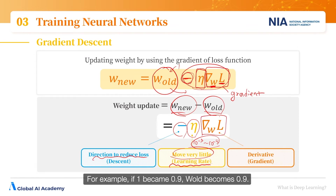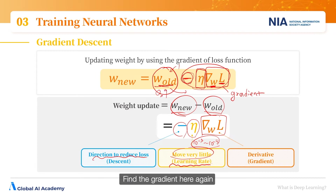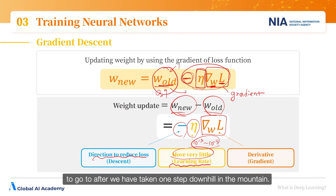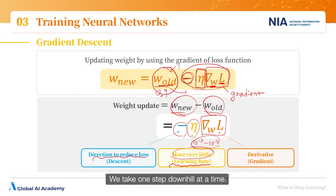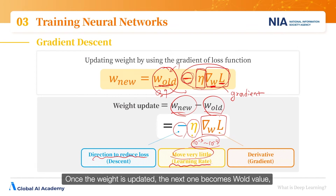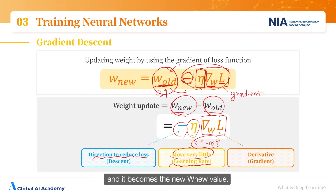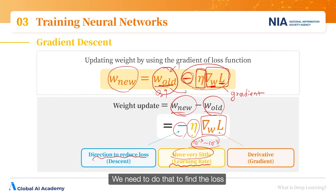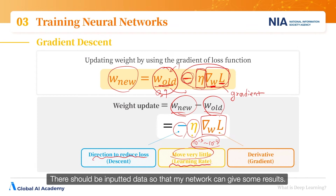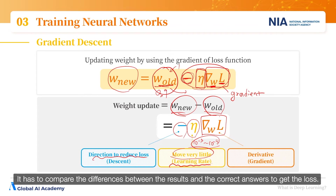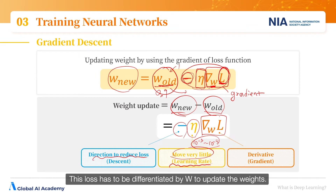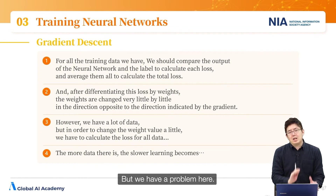For example, if 1 became 0.9, w_old becomes 0.9. We find the gradient here again — as if deciding the next direction after taking one step downhill in the mountain. We take one step downhill at a time. Once the weight is updated, the next w_old becomes the new value. We need to input data each time to find the loss, because we need to compare with the correct answers. The network gives results, compares differences with correct answers to get the loss, then differentiates the loss by w to update the weights.